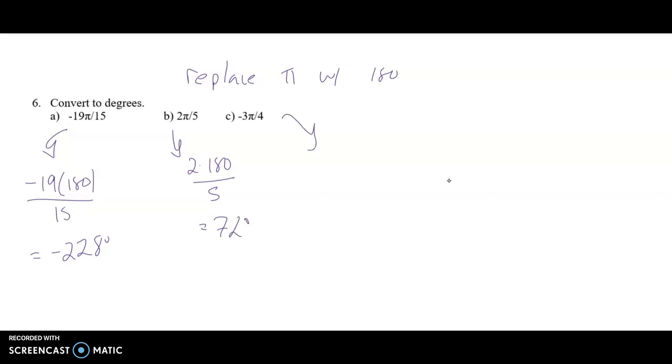Last one. Negative 3, replace the pi with a 180. And then 0, and then divide by 4. Type that into my calculator. We get negative 135 degrees.